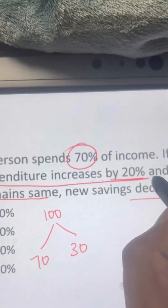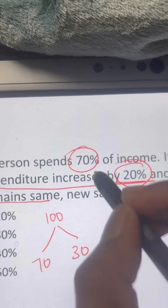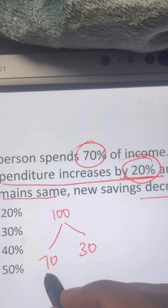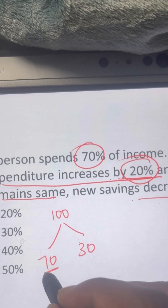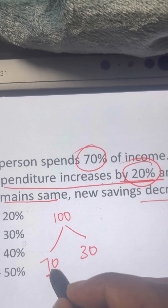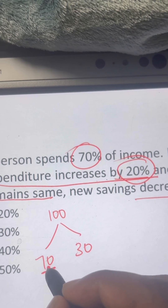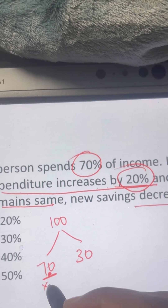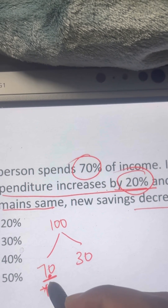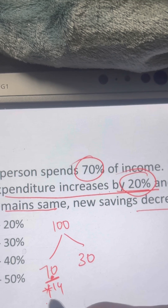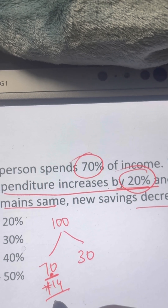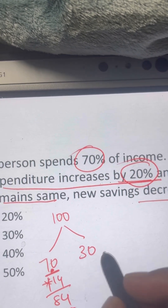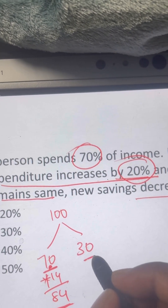Expenditure increases by 20%. The original expenditure was 70 rupees. 10% of 70 is 7 rupees, so 20% is 14 rupees. Therefore, new spending will be 84 rupees.